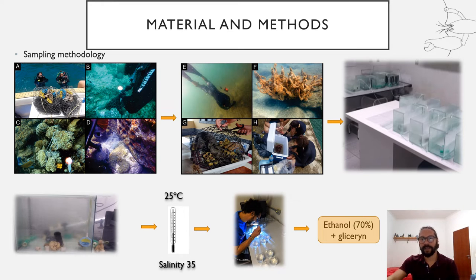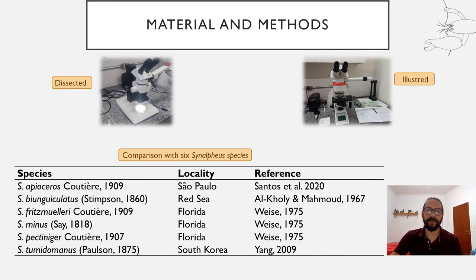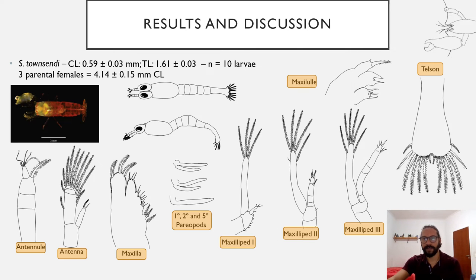They were observed until the larvae hatched. After the hatch, the larvae were fixed in a mixture of ethanol and glycerin. The larvae were then dissected and illustrated, and after we compared them with six other species of the Synalpheus genus with larval morphology already published. We found three ovigerous females of Synalpheus downsi and used ten larvae from each to describe all appendages found in the first larva of this species.